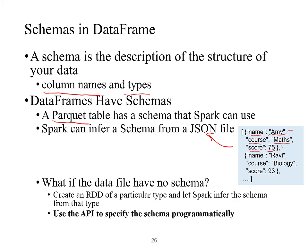But what if the data file has no schema — for example, a text file or a CSV with no column names? In this case, Spark SQL will create an RDD of a particular type and let Spark infer the schema from that type. Another way is to use the API to specify the schema programmatically. In this course, we will introduce the second approach.